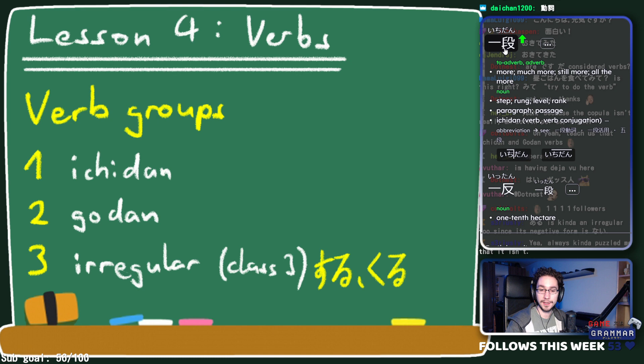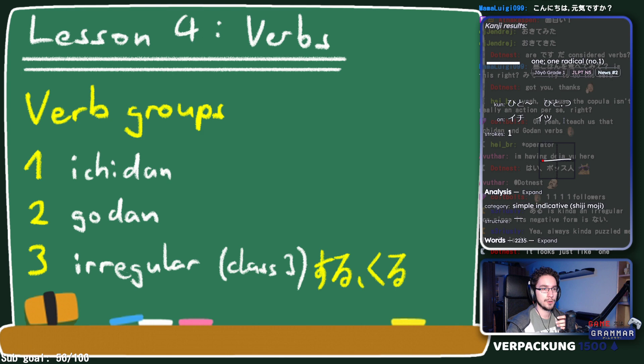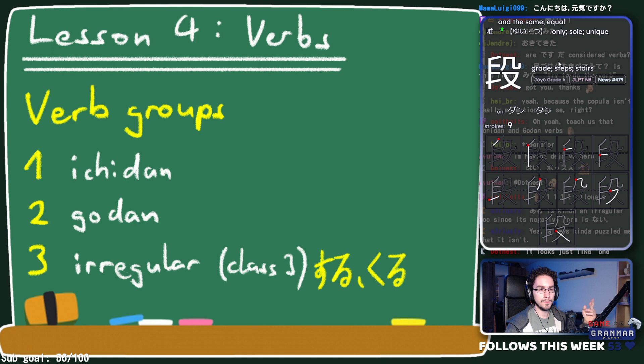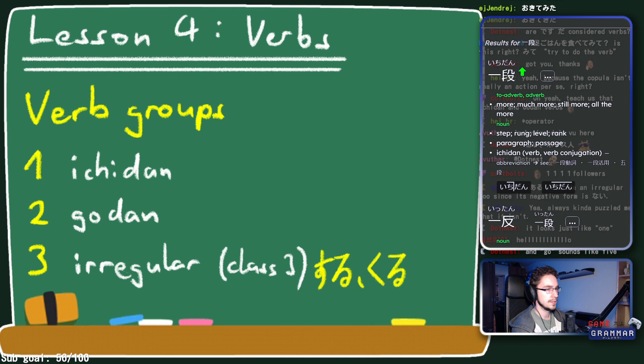If you look up ichidan in the dictionary you'll see the kanji clearly. The reason I use these terms is they make the most sense to me. Ichidan contains the kanji for 'one' — ichi — and godan contains 'five' — go. The dan is the same in both. Think of these as verbs with one step versus five steps.